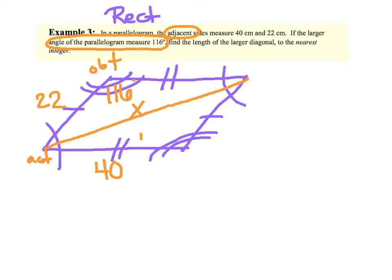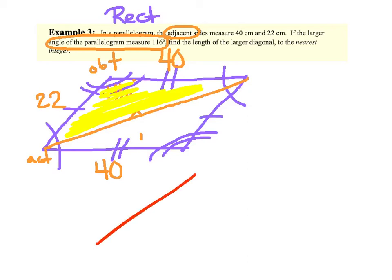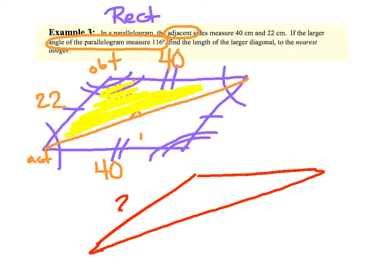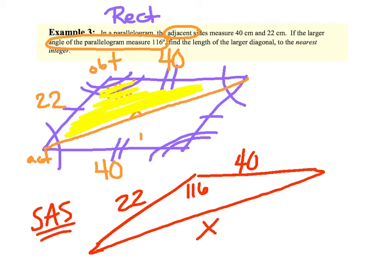A parallelogram is simply made up of two triangles. I'm going to take the top triangle and redraw it. I know this side is 22, this side is 40, this angle — the larger angle — is 116, and they wanted the larger diagonal. You can see we have a triangle with side, angle, side — so that's my hint that it's law of cosines again. You have the side but don't have either angle across, so you can't use sines; you've got to go cosines.